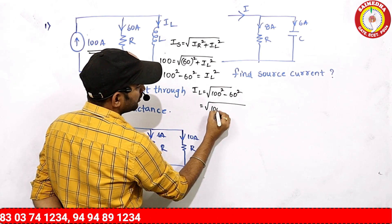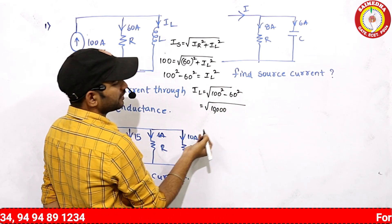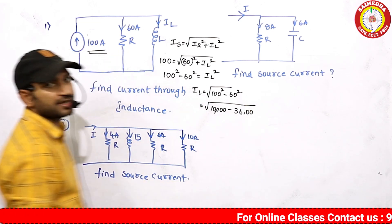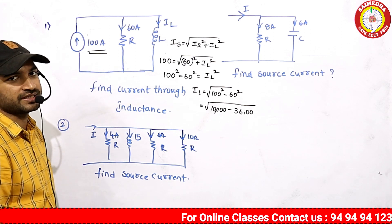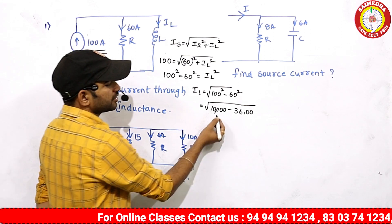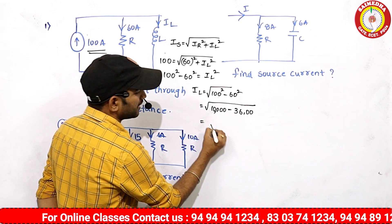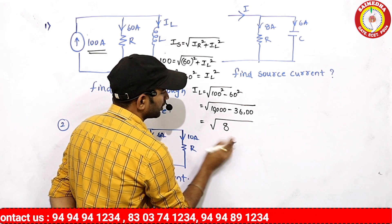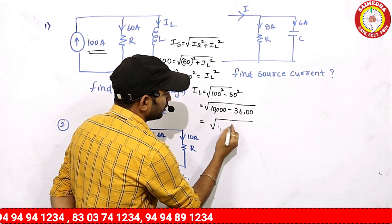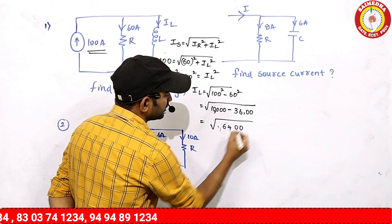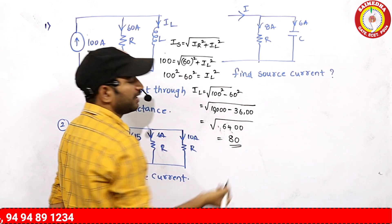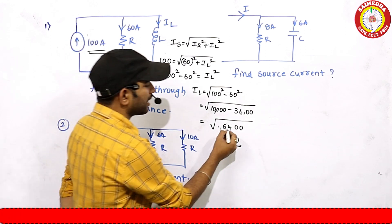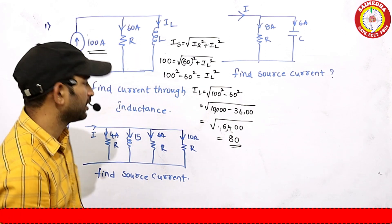100² means 10,000 minus 60² which is 3,600. So, 10,000 minus 3,600 equals 6,400. The square root of 6,400 is 80, because 80 × 80 = 6,400. So IL = 80A.